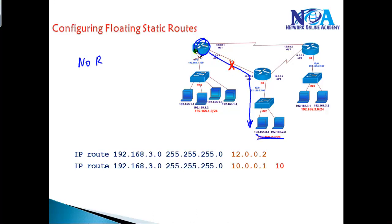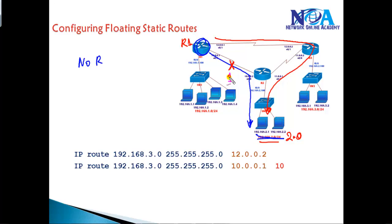To overcome that, we can write multiple static routes on Router 1 for the same destination — 192.168.2.0 network — and also write one more static route via an alternate route. We can configure something called administrative distance, where the default administrative distance is 1 for the primary route, and we can manually configure a higher administrative distance, like 10, on the backup route. The router will then decide the best route based on administrative distance, preferring the lower value.